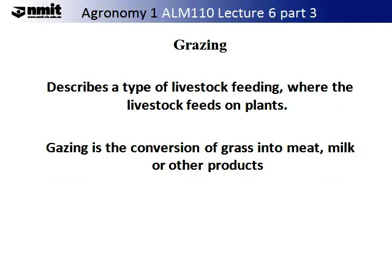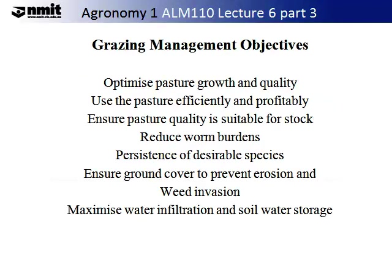Grazing is not a difficult concept to explain. It simply describes a type of livestock feeding where the livestock feeds on the plants. Grazing can be thought of as the conversion of grass into meat, milk or other products such as leather. There are several objectives when managing grass for grazing: to optimize pasture growth and quality, use the pasture efficiently and profitably, ensure pasture quality is suitable for stock, reduce worm burdens, maintain persistence of desirable species, ensure ground cover to prevent erosion and weed invasion, and maximize water infiltration and soil water storage.